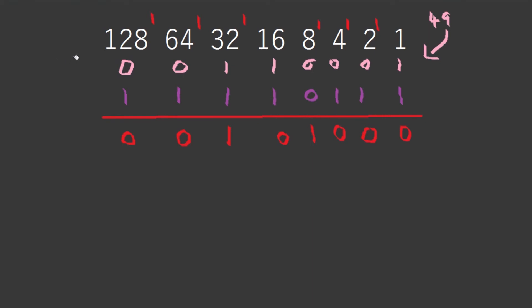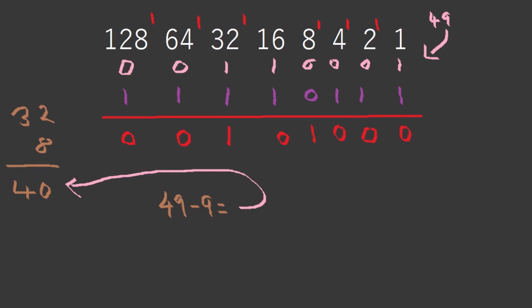You might find this really weird, but if we convert this back into our base 10 decimal system, let's use brown. Converting back: 32 plus 8 — we can do that in our heads, which is 40. Well done everyone. What is 49 minus 9? Oh my god, it works! We successfully subtracted two binary numbers from each other.